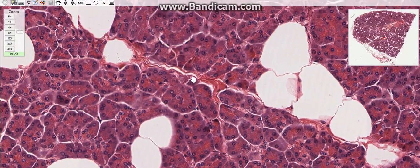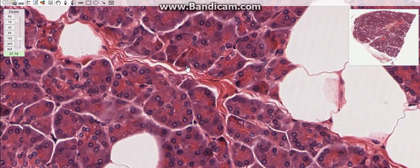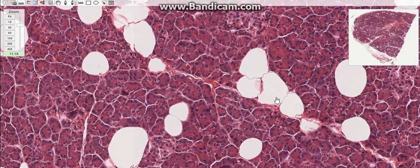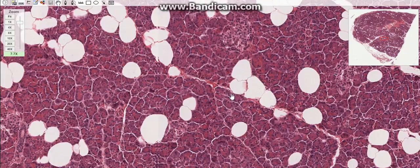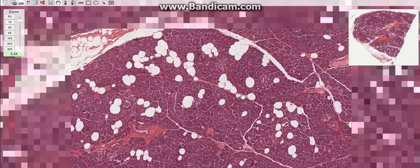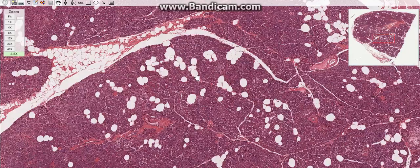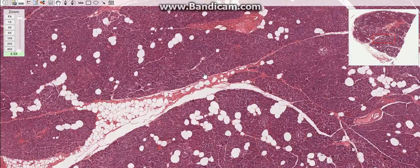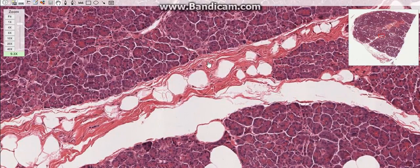The intralobular ducts drain into larger interlobular ducts. The interlobular ducts are in the septa of the gland and are lined by simple columnar epithelium. These drain directly into the main pancreatic duct.